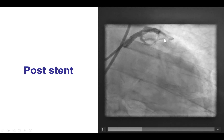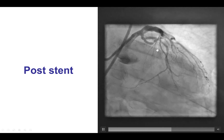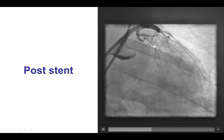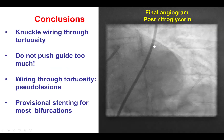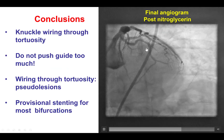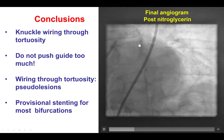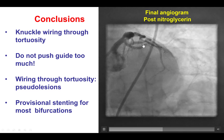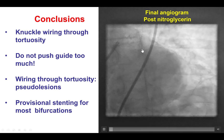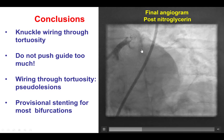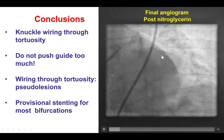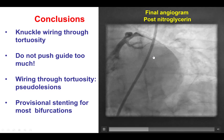We do have TIMI flow into the obtuse marginal branch. There is a lesion distally which could be spasm. So nitroglycerin was given, that significantly improved that disease, and it looks like this was actually spasm.